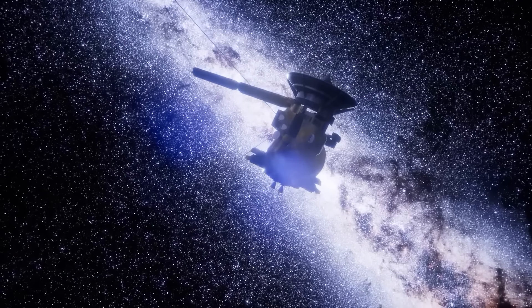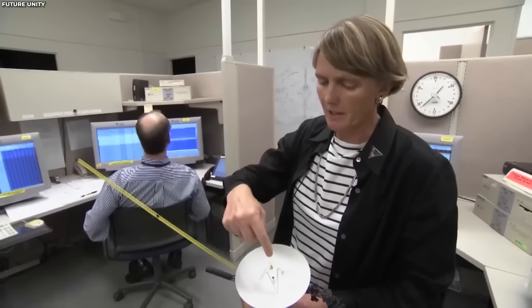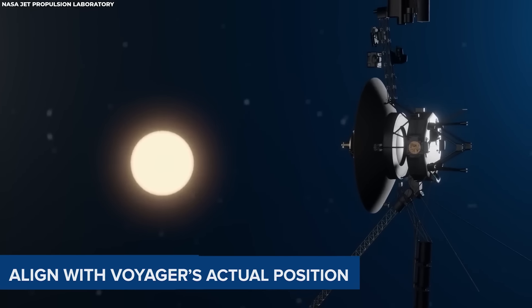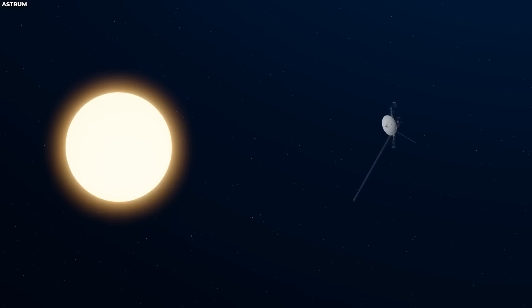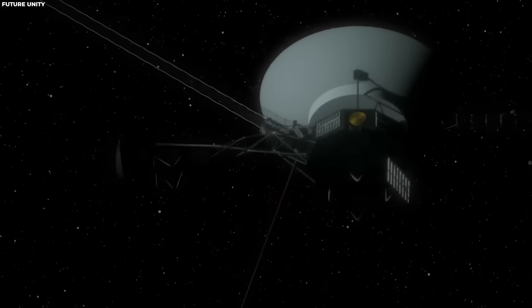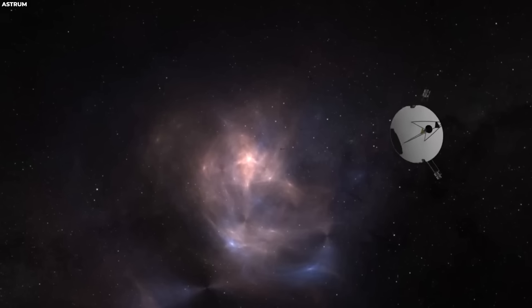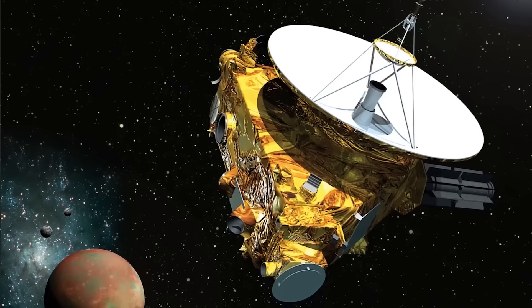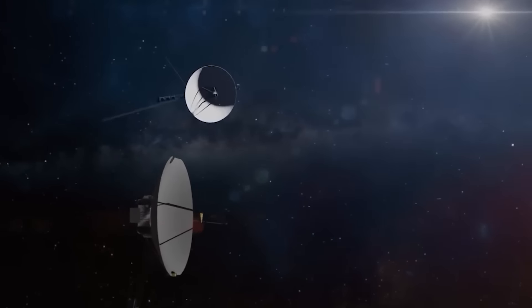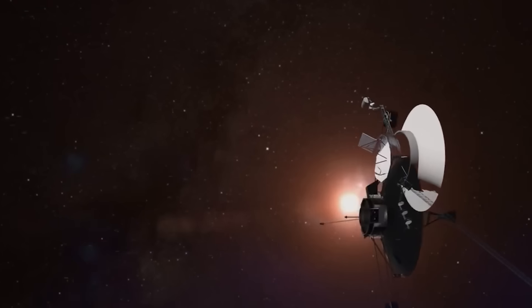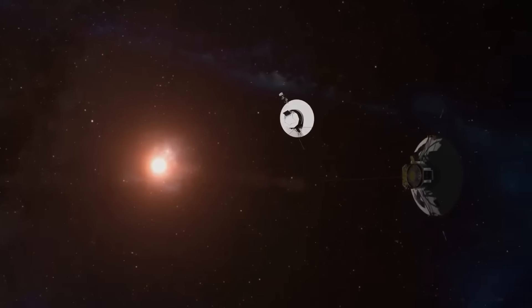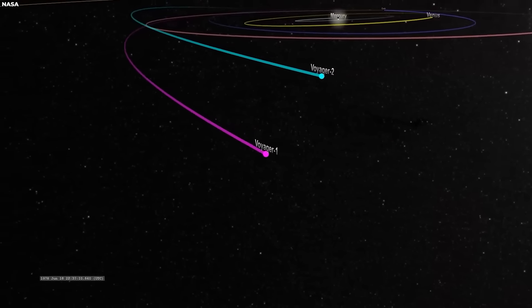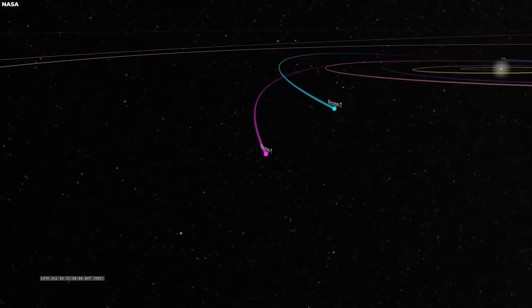However, there's a problem. The data from the Attitude Articulation and Control System, AACS, which manages the spacecraft's orientation, doesn't align with Voyager's actual position. Imagine a compass that's supposed to show which way Voyager is pointing, but it keeps giving random directions. This makes it difficult to understand how Voyager is oriented and whether its antenna is correctly aligned to communicate with Earth. Because Voyager is so far out in interstellar space, it takes light 20 hours and 33 minutes to travel one way. As a result, sending a message to Voyager and receiving a reply takes about two days.